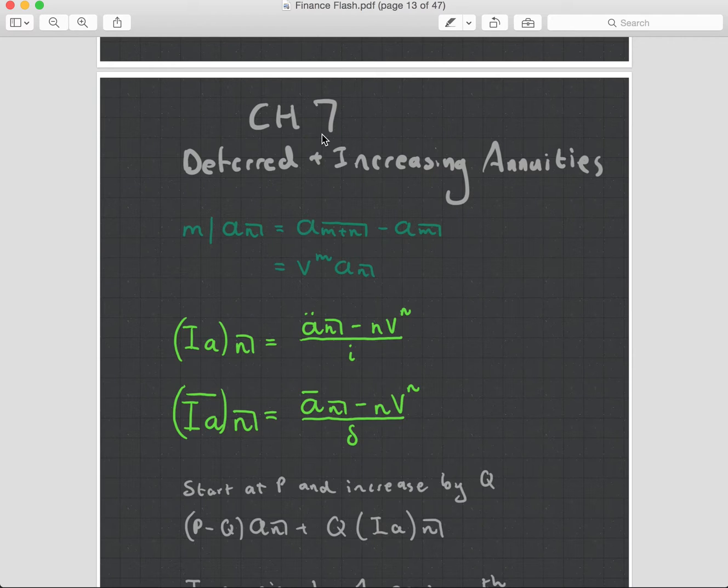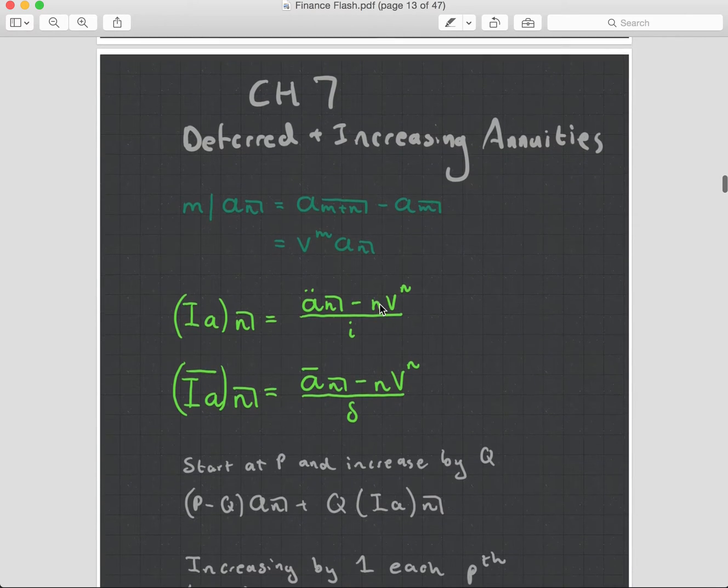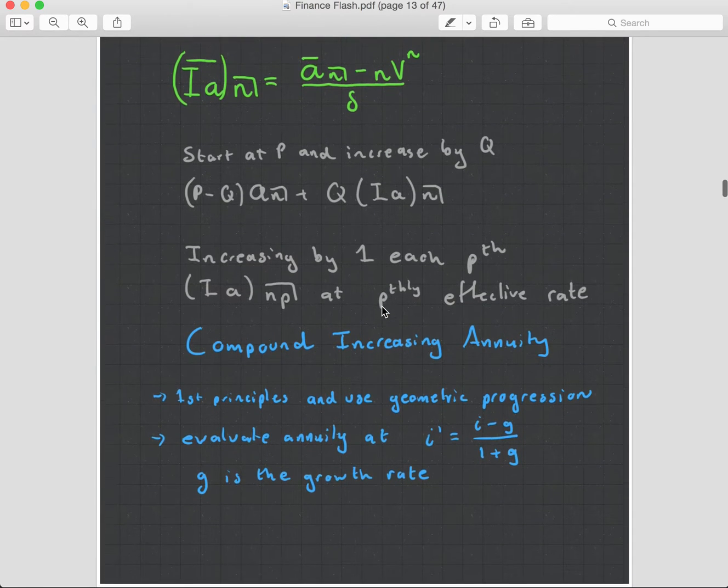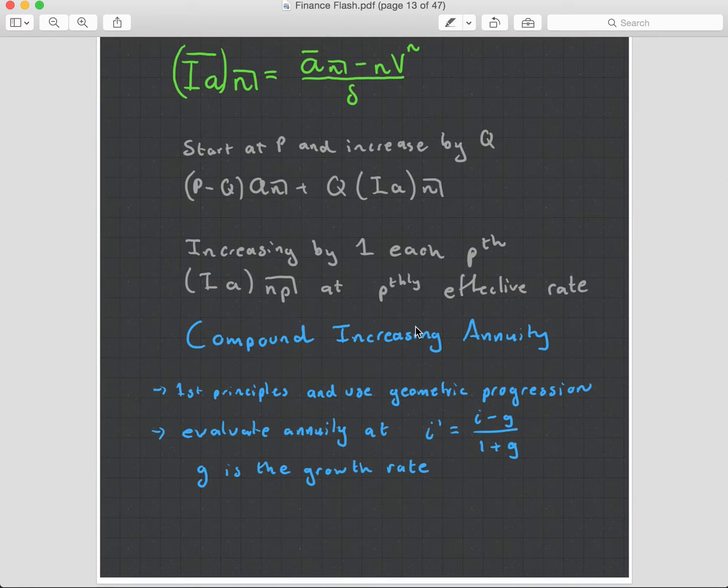So what you can do is you can have an annuity that increases with time. And the idea is that this increase matches inflation. The annuity will be increasing by a percentage. We call this type of annuity a compound increasing annuity.